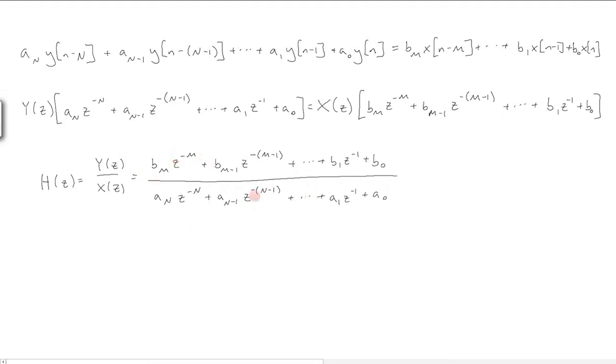These polynomials can be written in a different form, where instead of a polynomial we can factor it. We end up with a constant C factored out front, and the polynomials in terms of their roots, with M roots on top and N roots on the bottom.